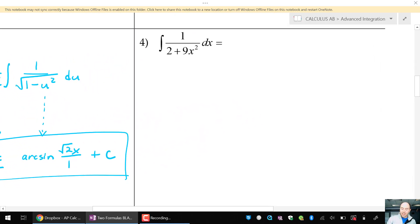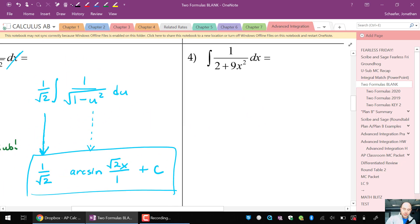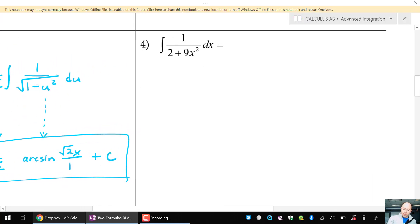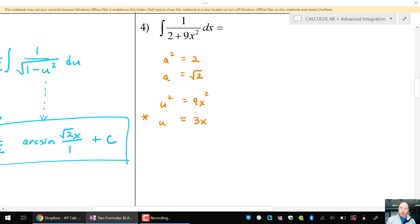Similar problem here with arctangent, let's do that one. So I see here that a squared looks like it's the number 2, which means a is root 2. And the function u squared is 9x squared. So regular u would just be the square root of that, which is 3x. And again, look at this, I'm going to put a star right here. I'm going to need u substitution because u and x are not perfectly equivalent.